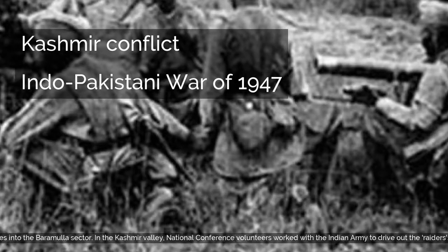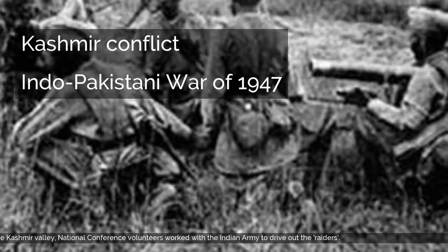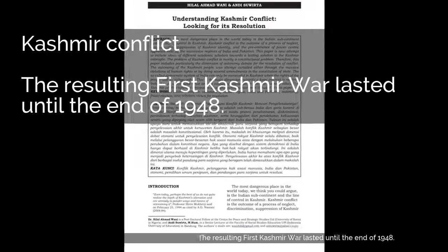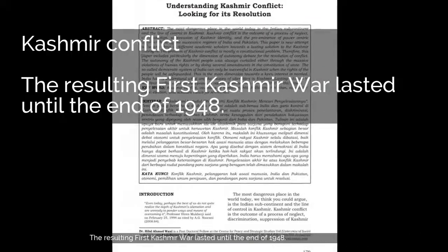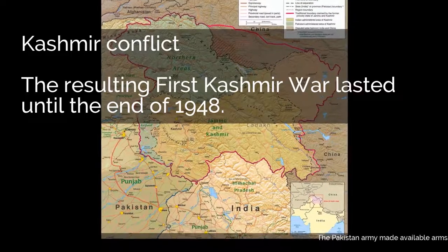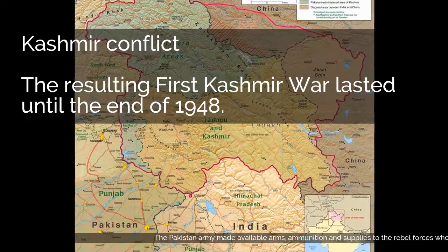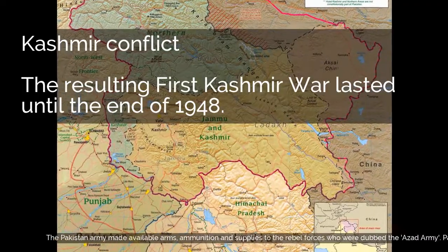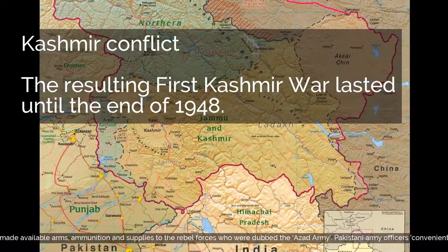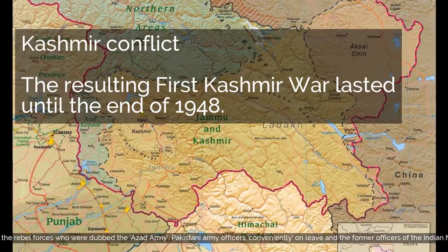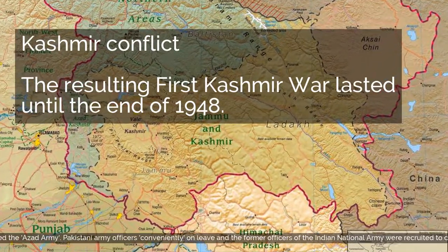Rebel forces from the western districts of the state and the Pakistani Pashtun tribesmen made rapid advances into the Baramulla sector. In the Kashmir Valley, National Conference volunteers worked with the Indian Army to drive out the raiders. The resulting First Kashmir War lasted until the end of 1948. The Pakistan Army made available arms, ammunition and supplies to the rebel forces, who were dubbed the Azad Army. Pakistani Army officers conveniently on leave and former officers of the Indian National Army were recruited to command the forces.